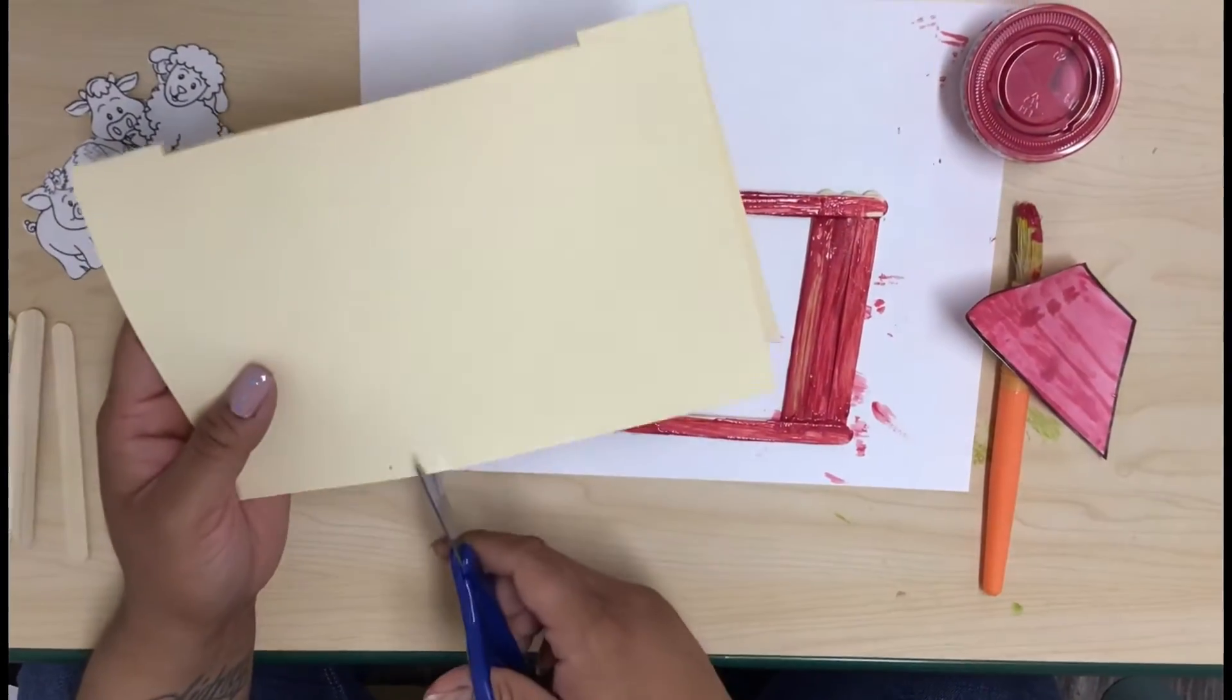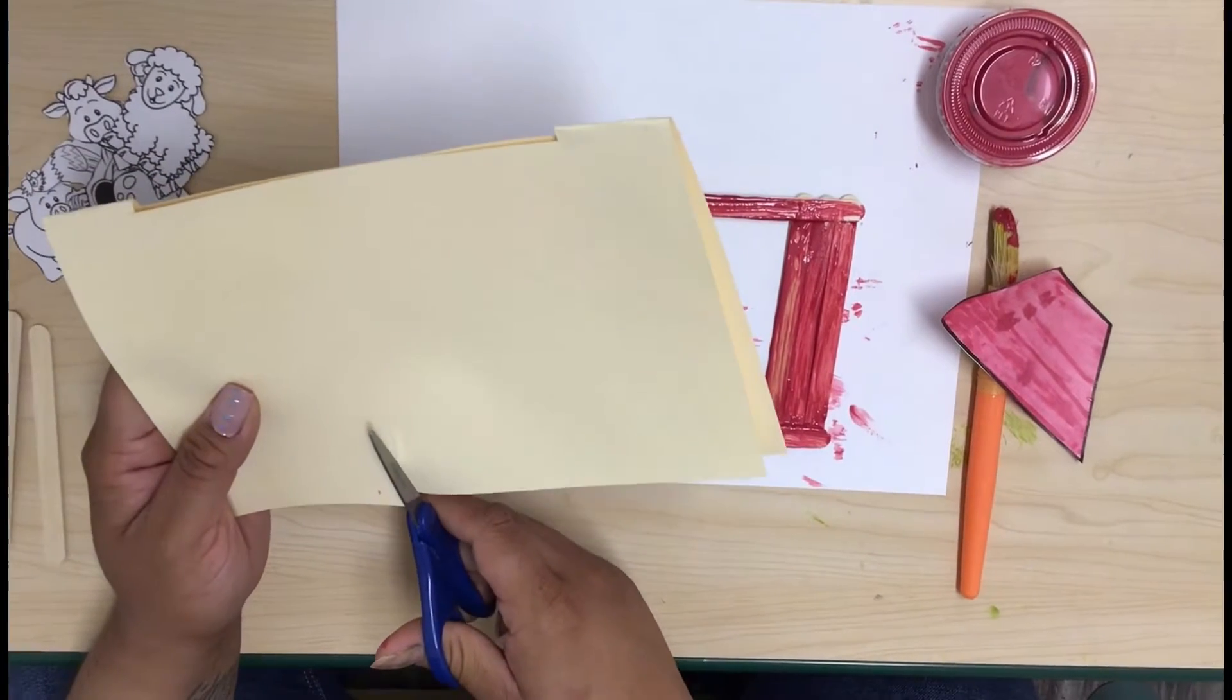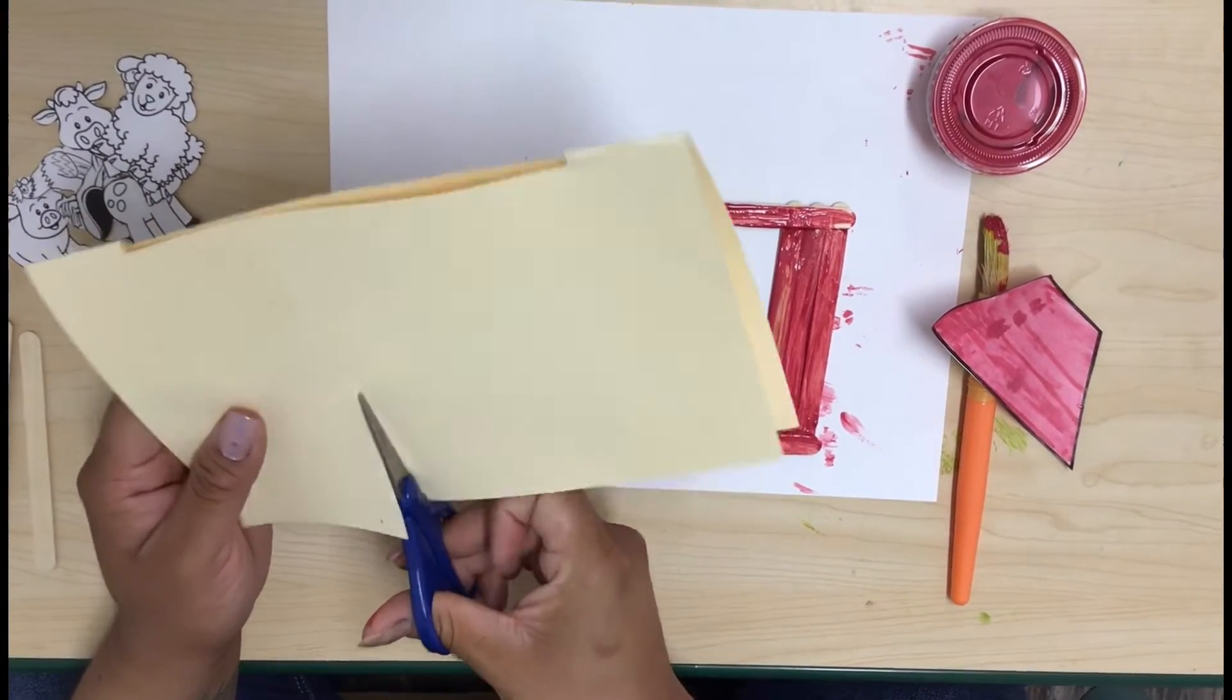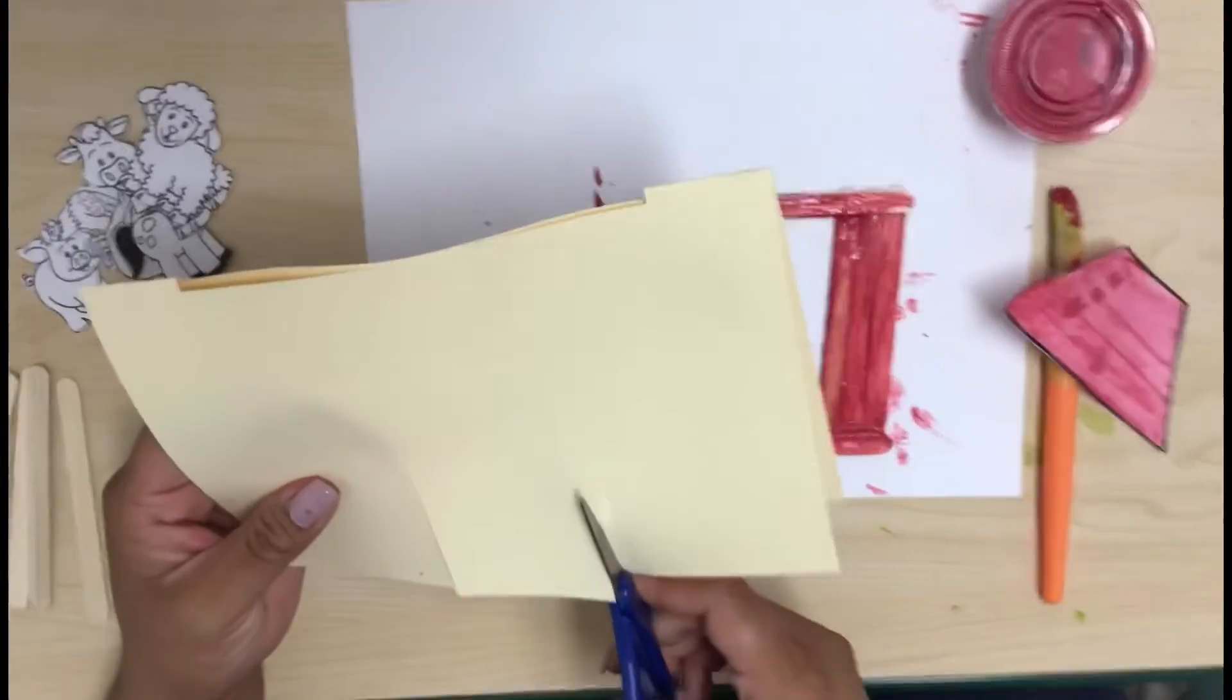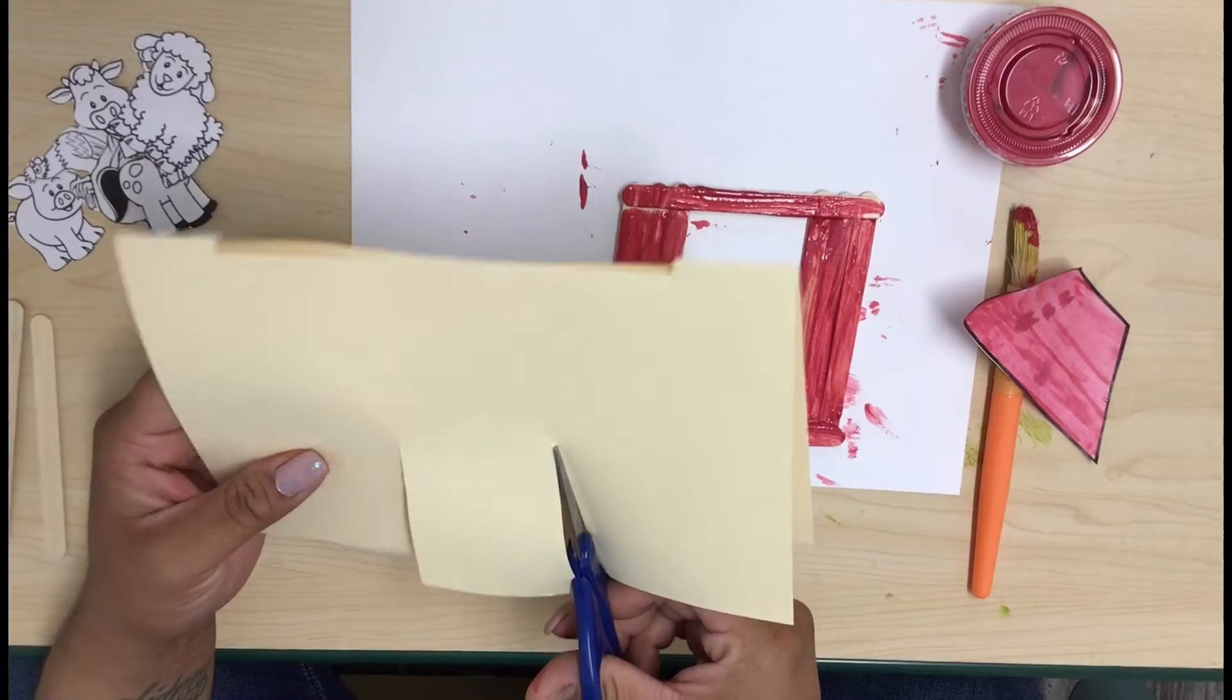Okay now we're going to cut a small opening for our door and this is where we're going to place our barn on top of once we cut out our door.